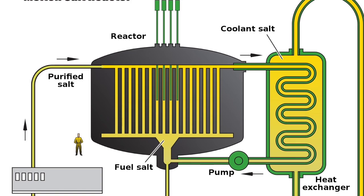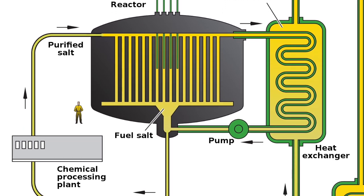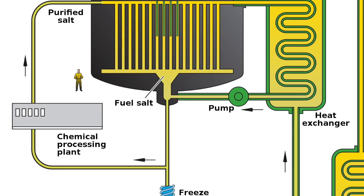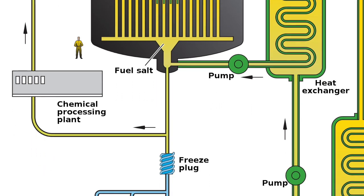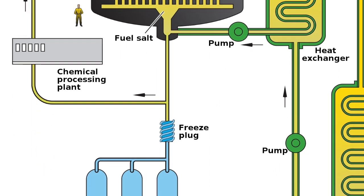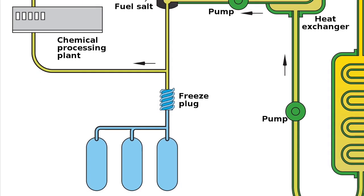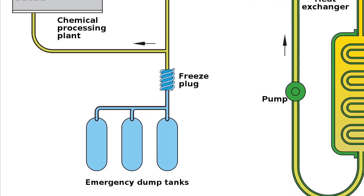In an emergency, the salt can be drained into a sump of a different geometry which does not support criticality, terminating the reaction. Many designs feature a plug of solid salt between the core and sump. If the reactor overheats, the plug melts and the core drains into the sump.